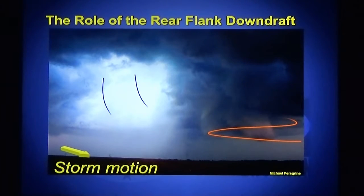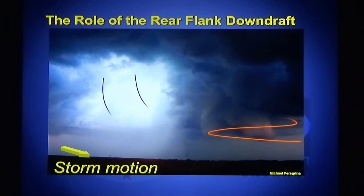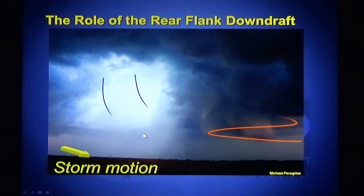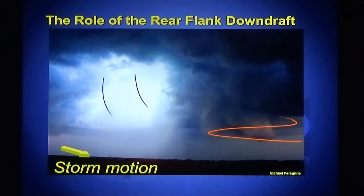Here's a drawing, a picture, and then some arrows put over it to show you the role of the rear flank downdraft. This sinking air way on the back of the storm causes clouds to dissipate. That's our rear flank downdraft, grabbing the circulation out of the thunderstorm and bringing it down to the ground as a tornado.